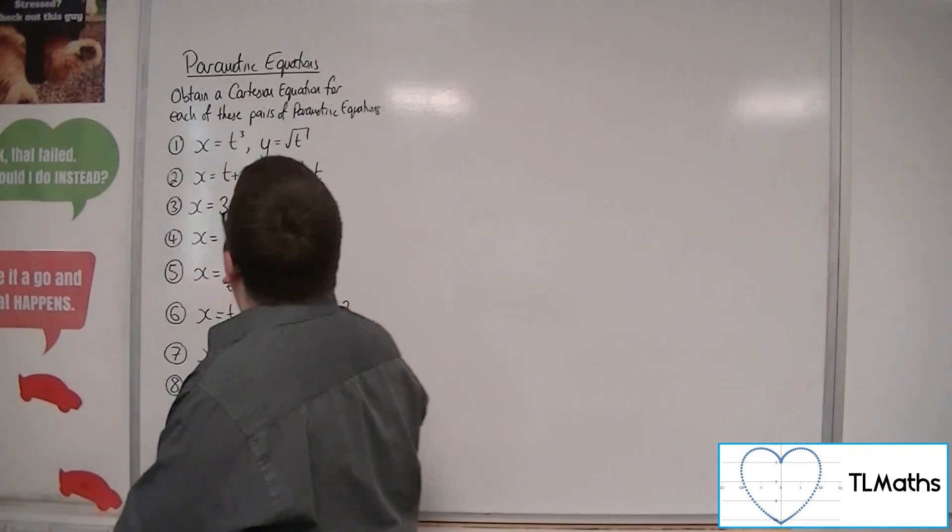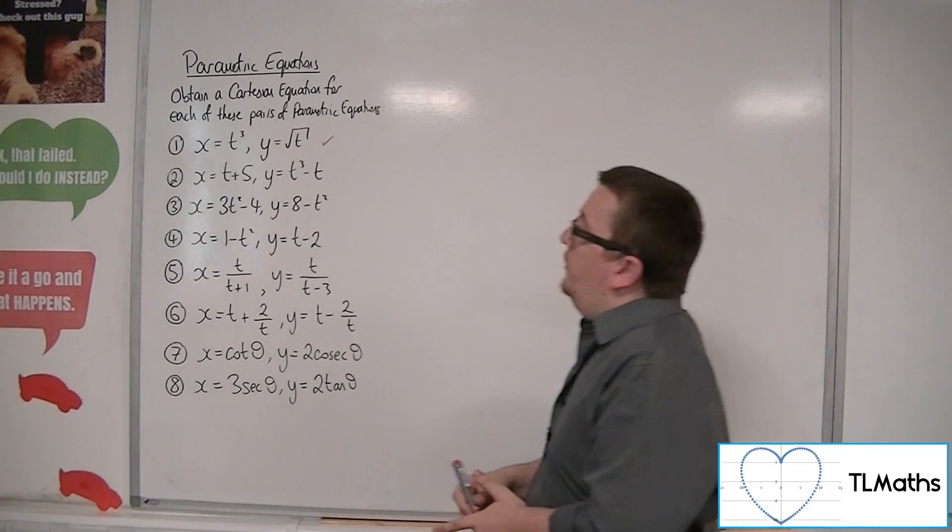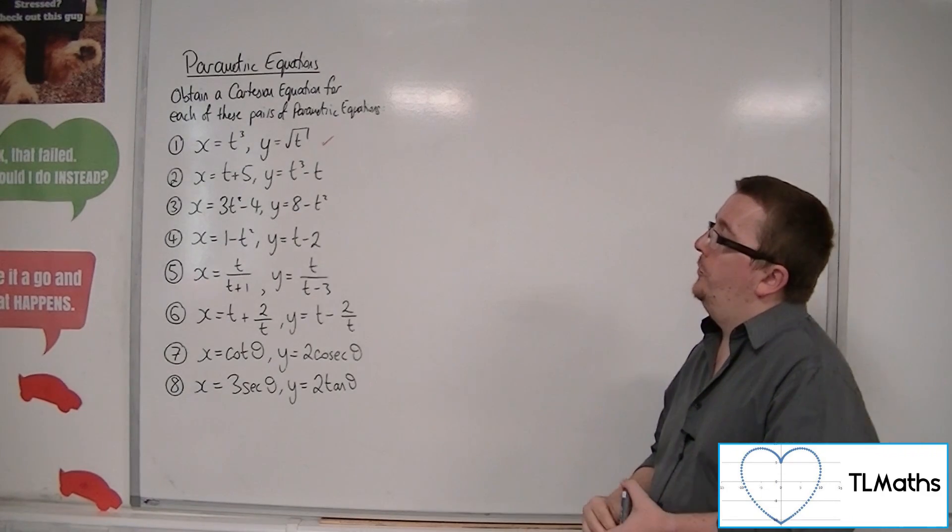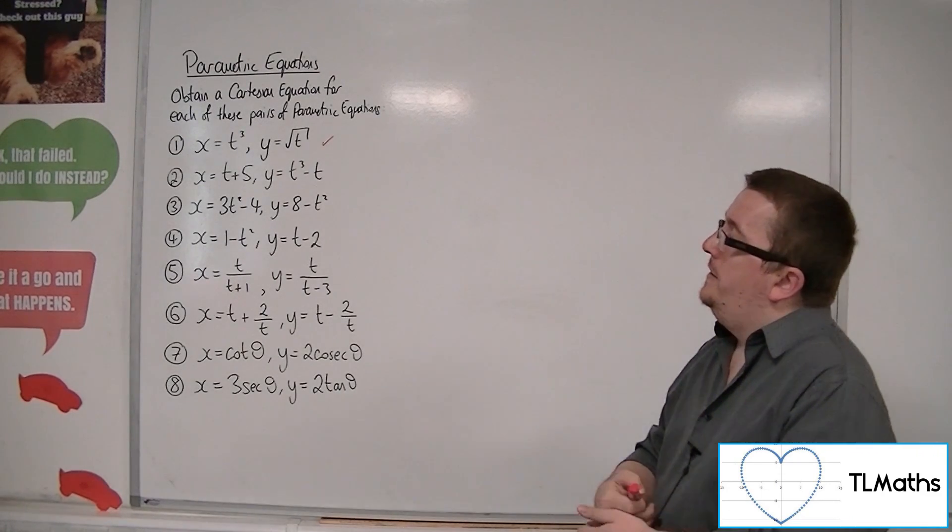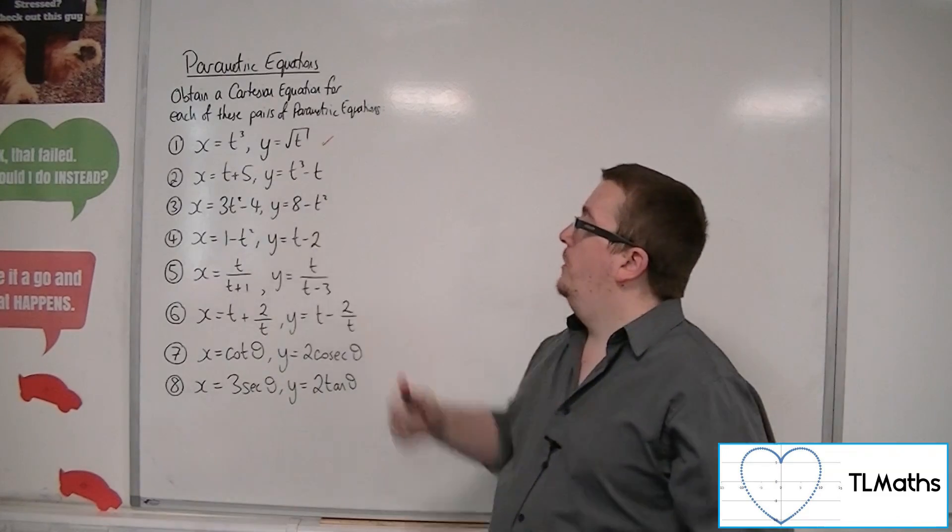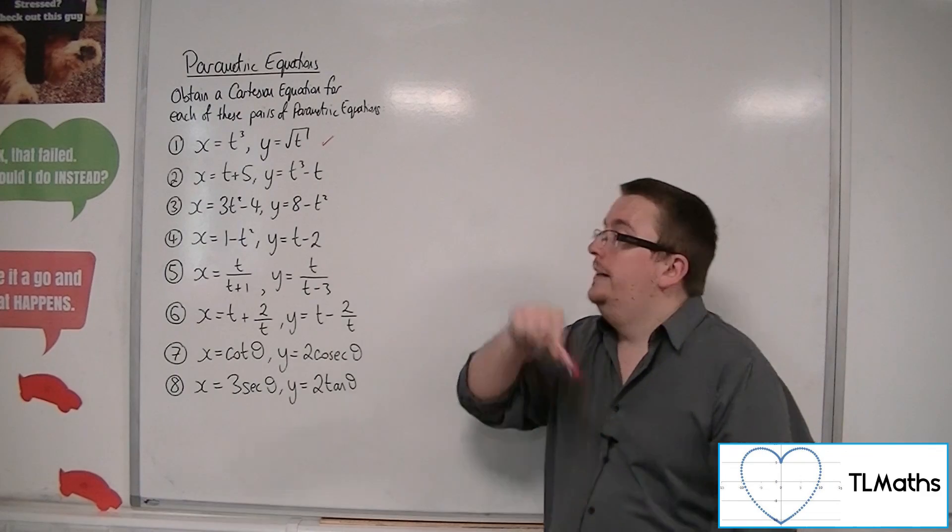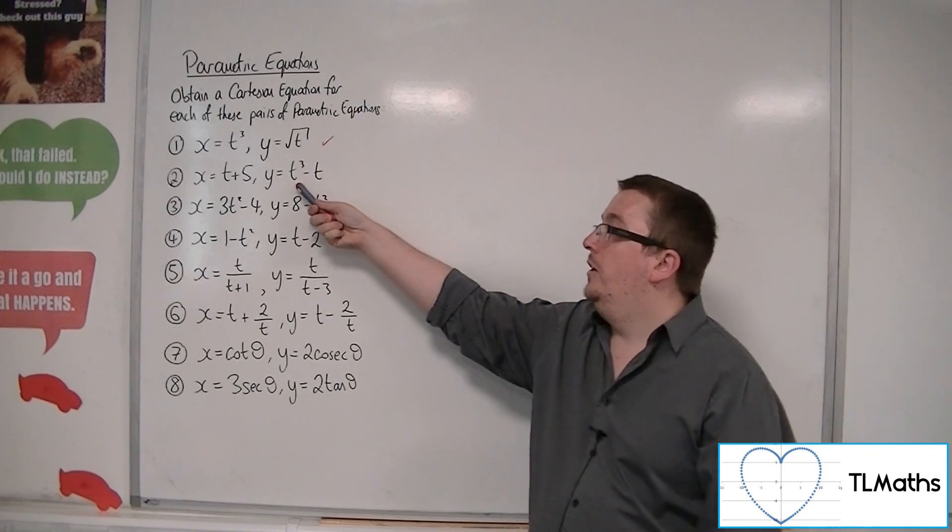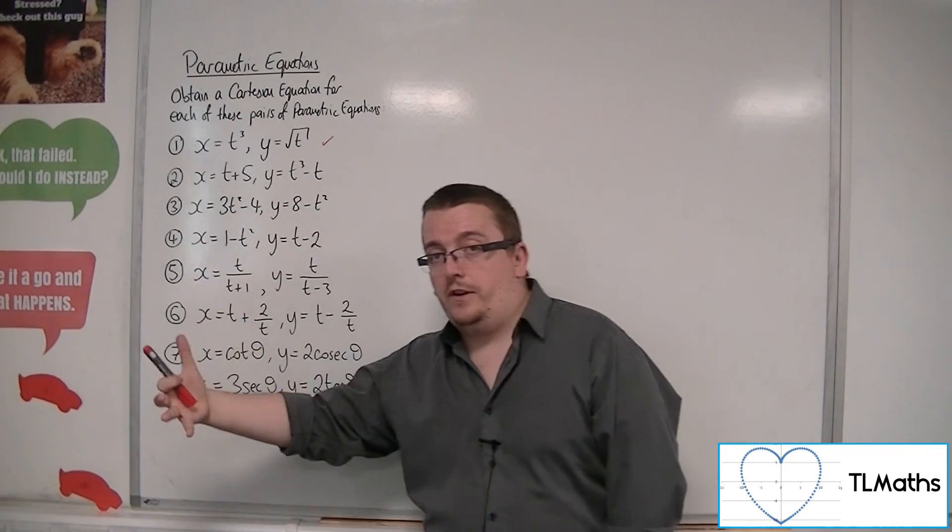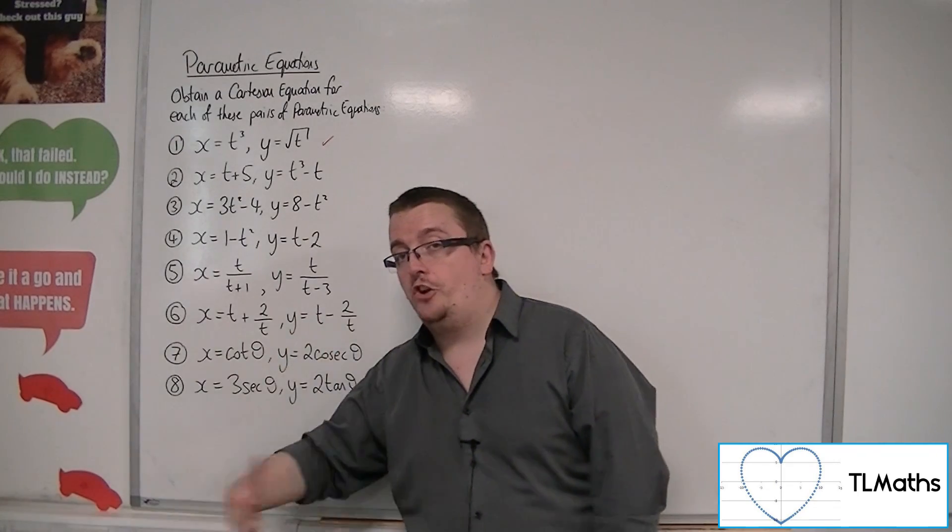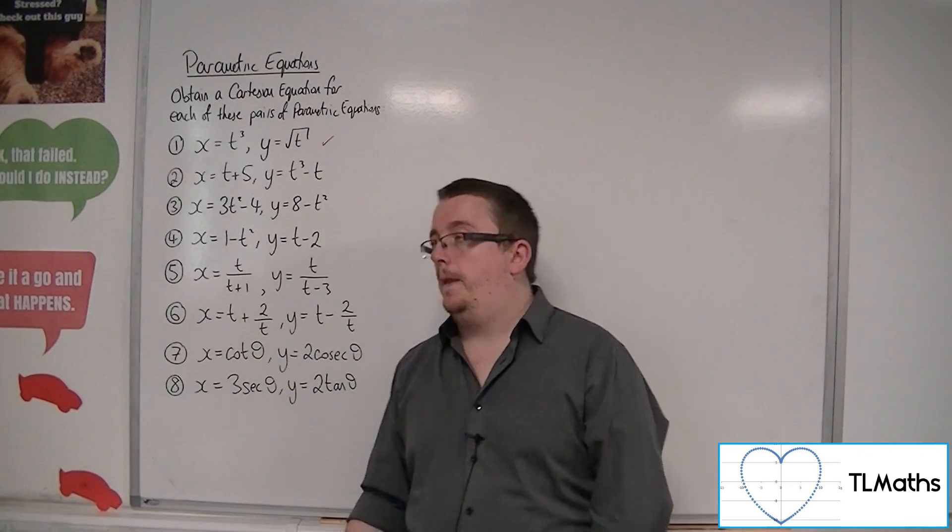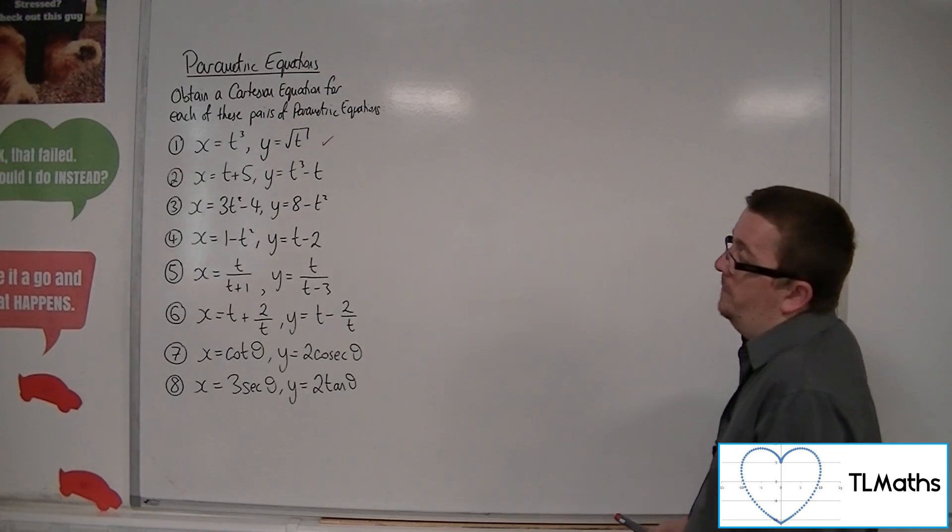Right, let's have a look at number 2. x equals t plus 5, y equals t cubed minus t. Now, in this case, if I looked at the y equals t cubed minus t, there is actually no way to get t equals something on the other side, so t equals a function of just y. Okay, there's no way to actually rearrange that to do it.